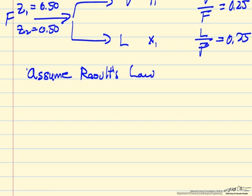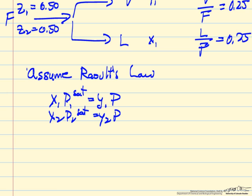So if we wanted to go through the detailed calculations, we're essentially saying that x1 P1^sat equals y1 times P. x2 P2^sat is y2 times P. We're given P1^sat but not P2^sat. And we would then do mass balances.